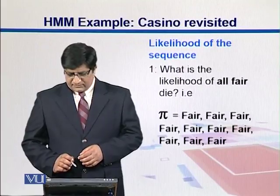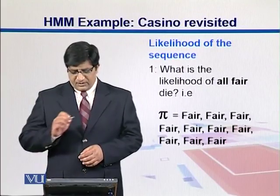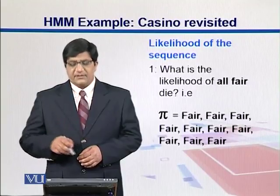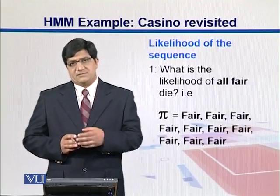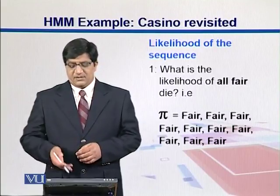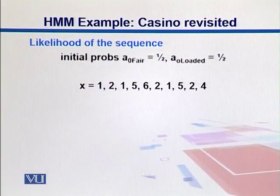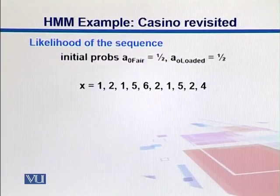So let's look into what is the likelihood of all fair die. So we are interested in a path in which all fair dice we can say for plural. So all of them they were used. So likelihood of the sequence can be calculated like this.